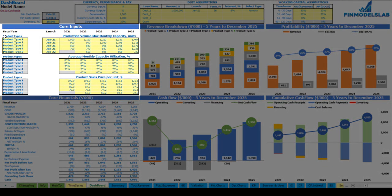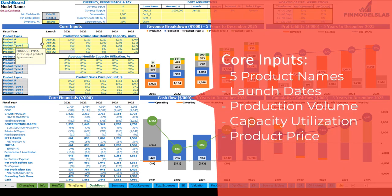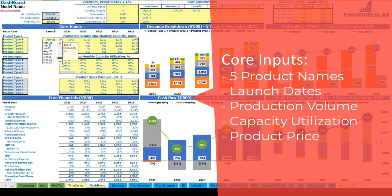Let's start from the core inputs. On the top left section you have up to five product types or groups. All these yellow cells are changeable, so you can set up product A, product B, or any other name you would like. The next step is to set up the launch date or start of production for each of these product types — you can use a dropdown and set any month within this five-year model. The next step is to set up your production volume maximum monthly capacity in units.